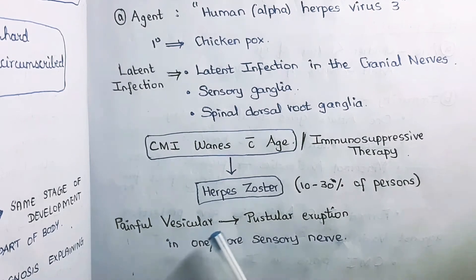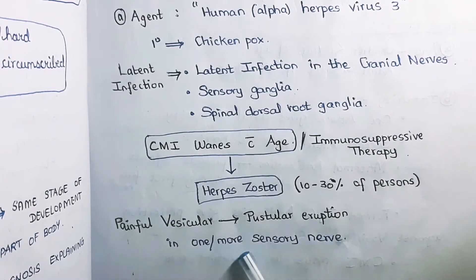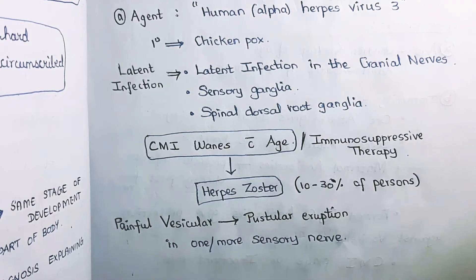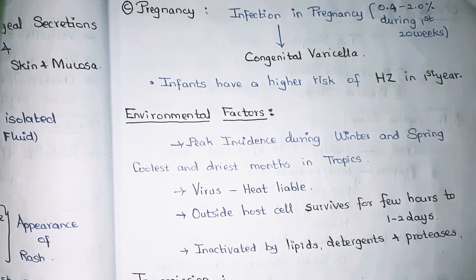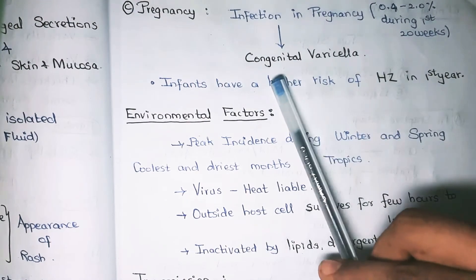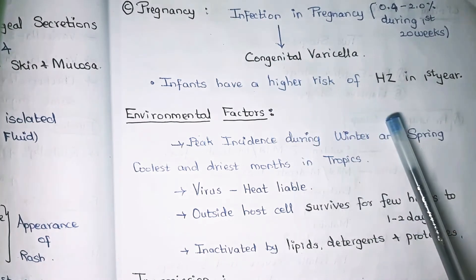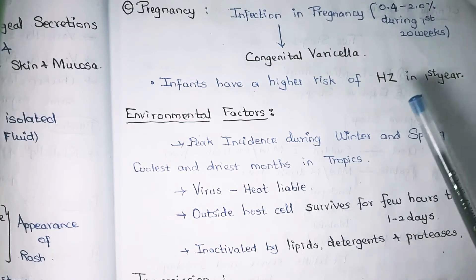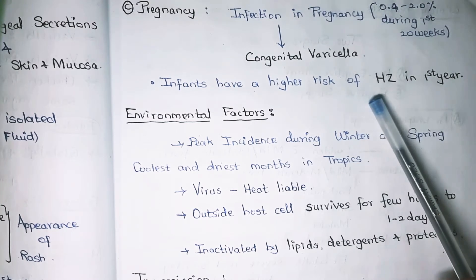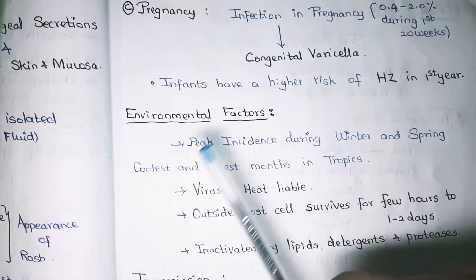In herpes zoster, painful vesicular rashes turn into pustular eruptions in one or more sensory nerves. If the infection occurs during pregnancy in the first trimester — that is during the first 20 weeks — the baby has a higher probability of getting congenital varicella. Infants also have a higher risk of developing herpes zoster in their first year of life.